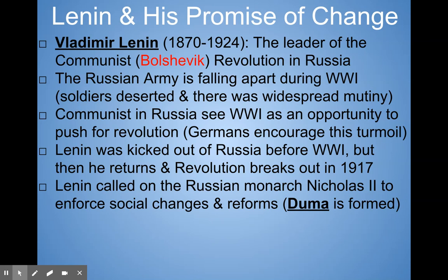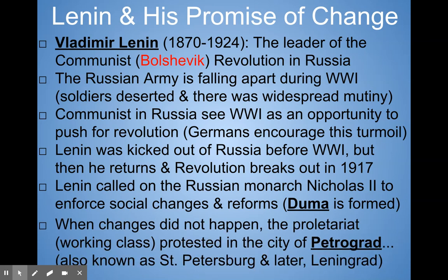Lenin called on the Russian monarch Nicholas II to enforce social change and reform the Duma — kind of like a parliament in Russia. The czar being an absolute monarch in the year 1914 was like a throwback to the 1600s and 1700s. When change didn't happen, the proletariat — the working class — protested in the city of Petrograd. During World War I, St. Petersburg sounded too German, so people started calling it Petrograd. After the revolution, they'd call it Leningrad. So that's the same city with three names — today if you go to Russia, it'll likely be called St. Petersburg.